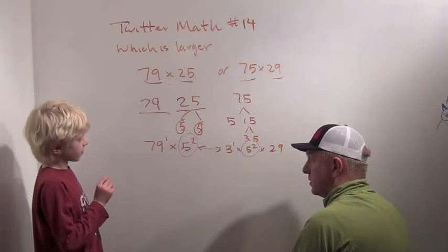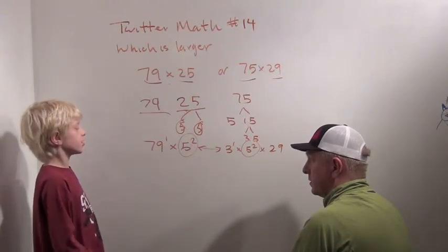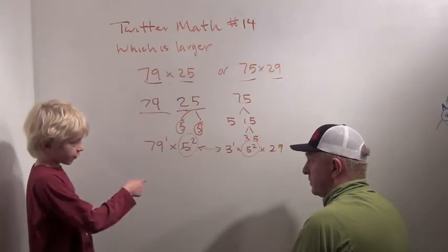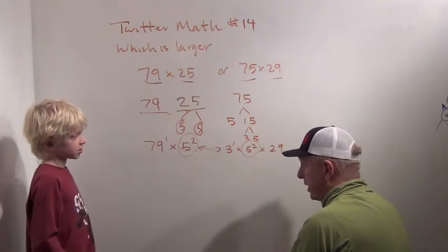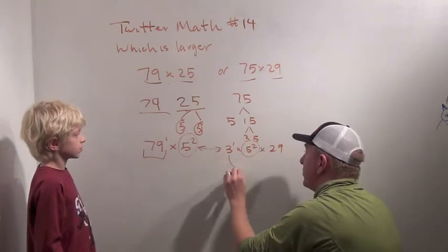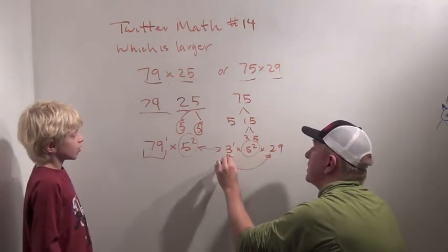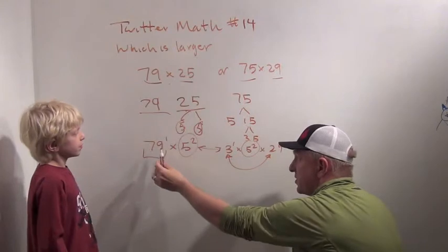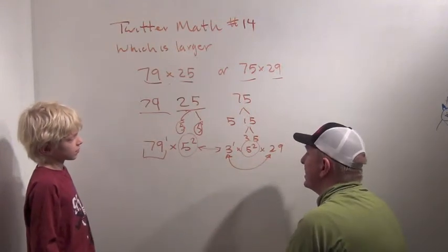Well, we have to... I think it's the largest power of each. Not quite. We have to figure out if 79 is bigger than 3 times 29. Because that's what's left after the 5 squareds. So which is larger? 79 or 3 times 29?